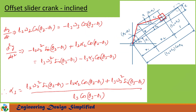After differentiating the equation Y with respect to time twice and simplifying, we can find the angular acceleration of the coupler link: alpha 3 equals [L2 omega 2 squared sine(theta 2 minus theta 1) minus L2 alpha 2 cos(theta 2 minus theta 1) plus L3 omega 3 squared sine(theta 3 minus theta 1)] divided by L3 cos(theta 3 minus theta 1). Here, omega 2 is angular velocity of the crank, alpha 2 is angular acceleration of the crank, omega 3 is angular velocity of the coupler, and alpha 3 is angular acceleration of the coupler.